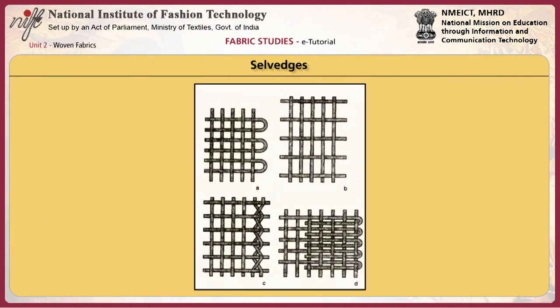The warp yarns are parallel to the fabric edges called the selvedges. Selvedges are more compact than the body fabric and run along the length of the cloth for about a quarter to half inch width.